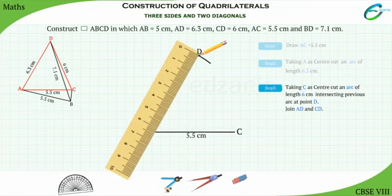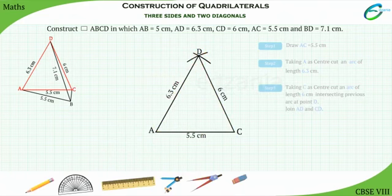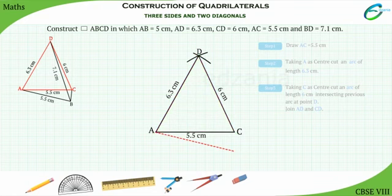Join AD and CD. Here we complete the triangle ADC. Now we need to construct the remaining two sides and a diagonal.